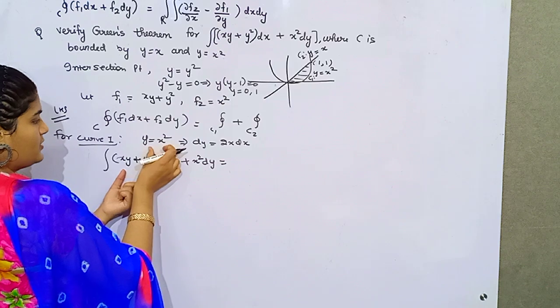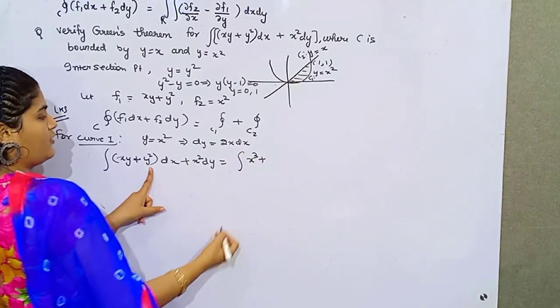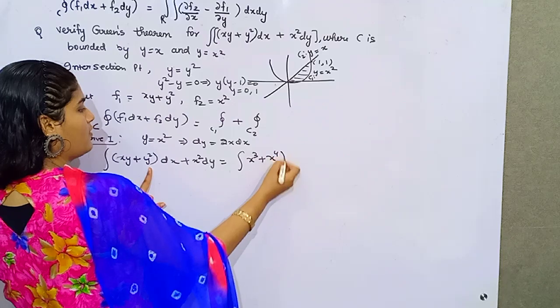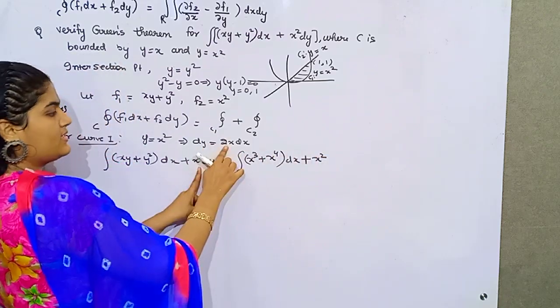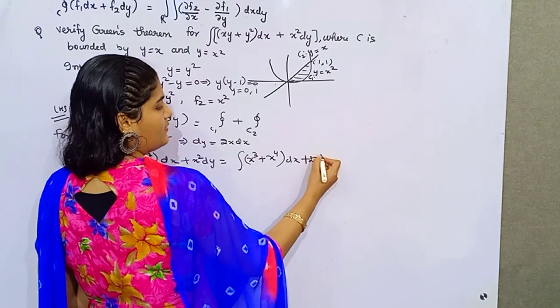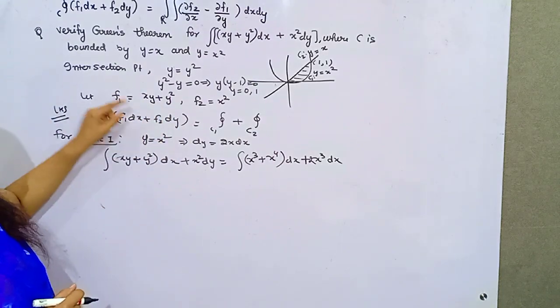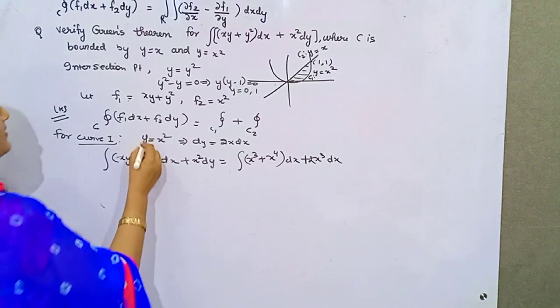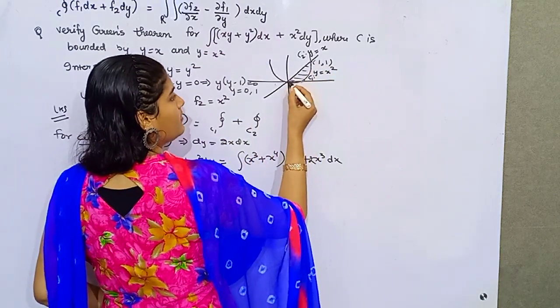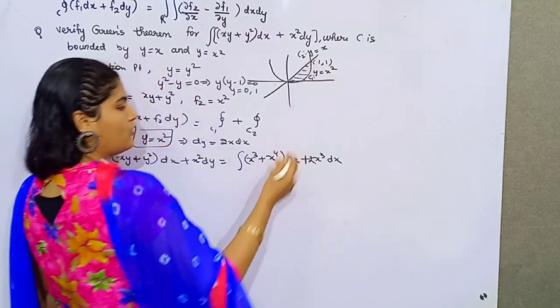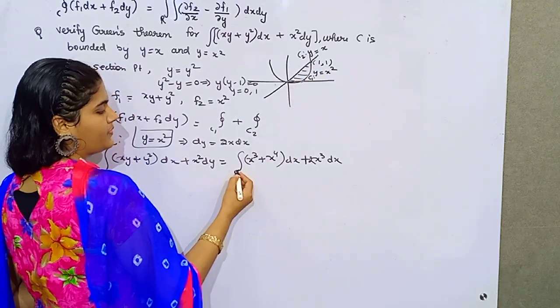Now substitute the values. Here, f1 is xy plus y squared dx plus x squared dy. This is your question for curve 1. Now if you substitute y as x squared here, if you put x squared, this would be x cubed. If you put x squared here, it would be x raised to power 4 dx plus x squared, and dy is 2x dx, so that means 2x cubed, which is x cubed dx. Because you are considering curve 1, y equals x squared, this curve is moving from origin to 1, 1. Because you have the values in terms of x, the value of x ranges from 0 to 1.